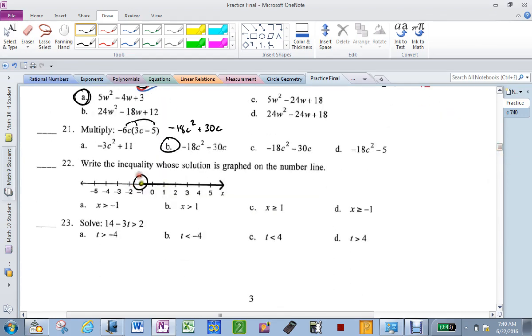Graph this guy. Closed dot. So x, arrow goes to the right, greater than or equal to negative 1.